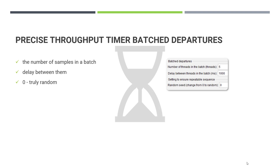One aspect is batch departures. Batch departures are very helpful if you are planning to send requests at the same time. There are certain business requirements where you have to hit the server with requests simultaneously — that is where batch departures come in. For example, sending five threads using a delay of one second means every one second, five threads will be triggered from JMeter.